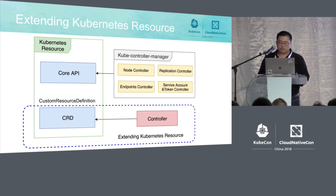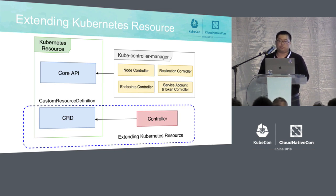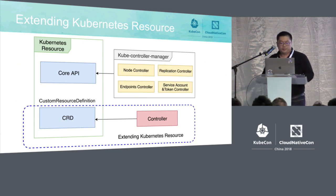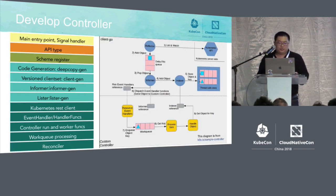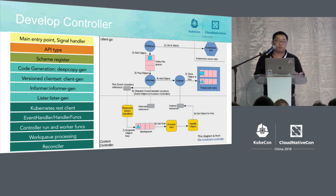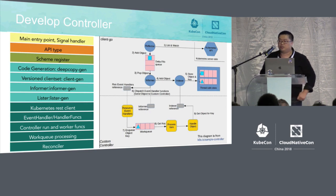In general, extending your Kubernetes resource means developing your CRD and controllers. CRD is very simple — it can be defined in a YAML file and operated by the kubectl command line just like other core APIs.